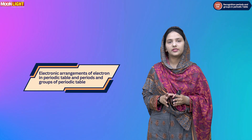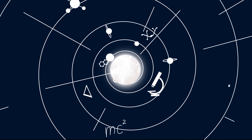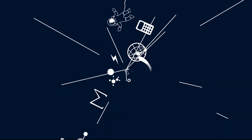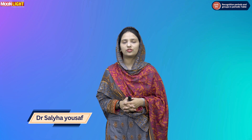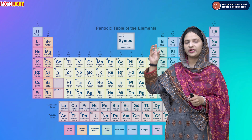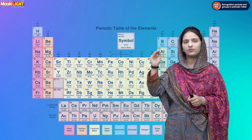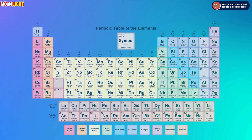Arrangement of electrons in the first 18 elements, and recognition of groups and periods in the periodic table. Welcome to Digital Academics provided by Moonlight International Publishers. In this video we will discuss the first 18 elements and in what increasing manner we can arrange these elements. Let us see the periodic table on our screen.